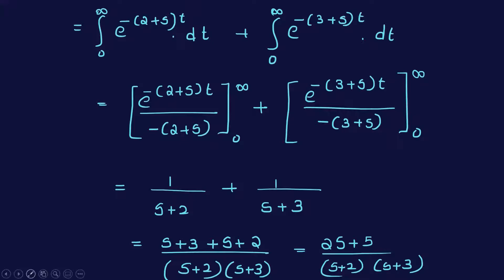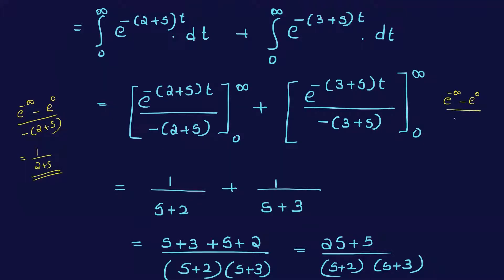Evaluating the integrals: e^(-(2+s)t) from 0 to infinity gives 1/(s+2), since e^(-infinity) = 0 and e^0 = 1. Similarly, e^(-(3+s)t) from 0 to infinity gives 1/(s+3).